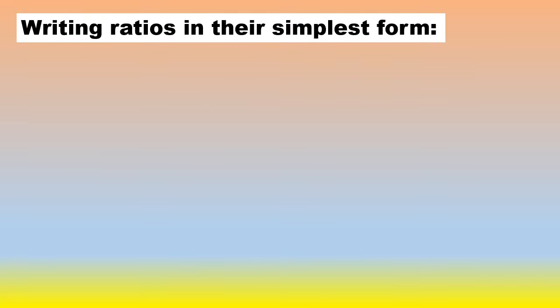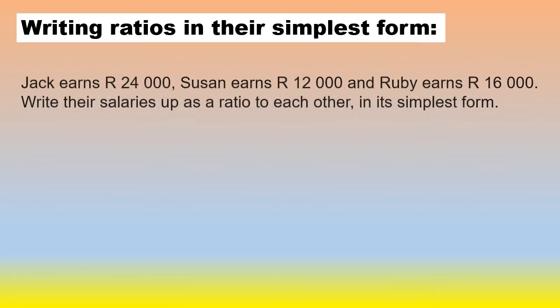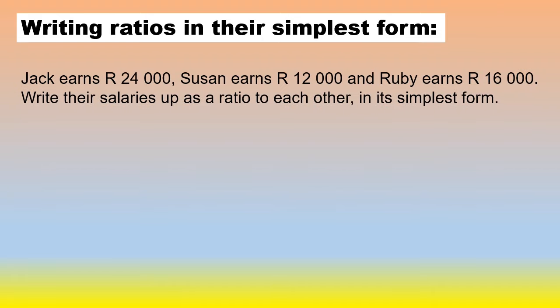Writing ratios in their simplest form. We're going to go through a few examples just to show you what to do when they ask you questions relating to ratios. Jack earns R 24,000, Susan earns R 12,000, and Ruby earns R 16,000. Write their salaries up as a ratio to each other in its simplest form.